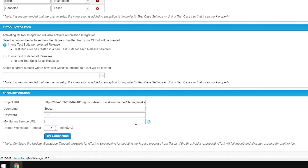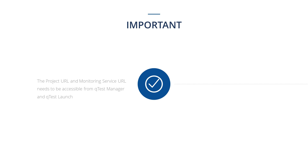Enter the password of your workspace in the Password field. In the next field, enter your Monitor Service URL. To learn how to locate your Monitoring Service URL, go through the manual link provided in this video's description. Please note, you need to verify that the Project URL and Monitor Service URL are accessible from QTES Manager and QTES Launch. This URL needs to be accessible from your internet browser in order to access the URL job.